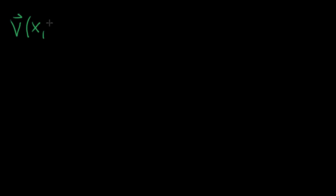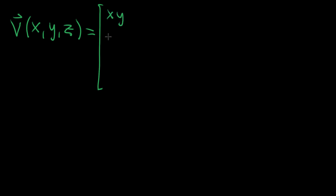Let's work through an actual curl computation. Let's say our vector-valued function v, which is a function of x, y, and z — this is going to be three-dimensional — is defined by the following components: the first component is x times y, the second one is cosine of z, and the last component is z squared plus y.